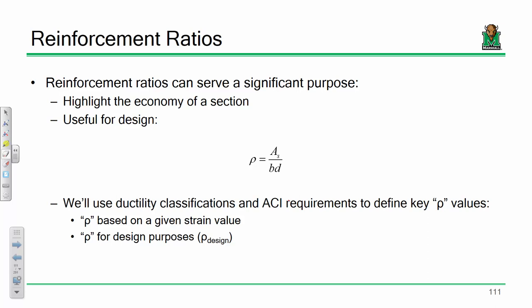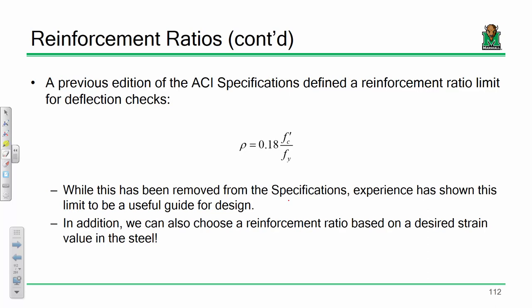I'm going to show you a couple of different ways to use ρ to perform a design. One approach came out of a previous edition of the ACI specs as a reinforcement ratio limit on deflection. It's not in the current spec, but it's pretty useful from a design standpoint: ρ = 0.18 fc' / fy. When you go to your textbook and look at Chapter 4 problems, you'll see problems that say 'use ρ = 0.18 fc' / fy for your design.' It's a rule of thumb — a little shortcut that makes your life easier.